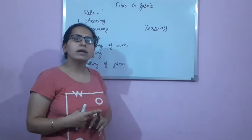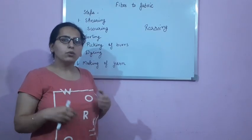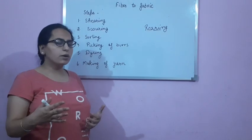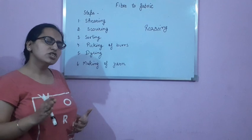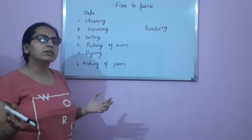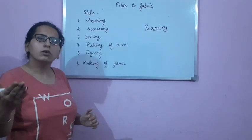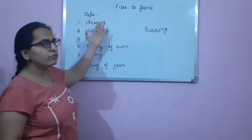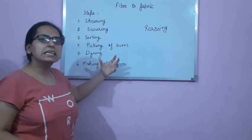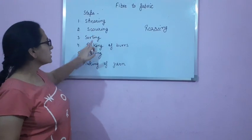When you provide the proper facilities to sheep, the sheep will start growing hair. As you know, hair is present on the body of sheep. The sheep is fully covered with hair, and basically that hair is used to make wool. Now how will we make wool from these hairy fibers? There are six steps.